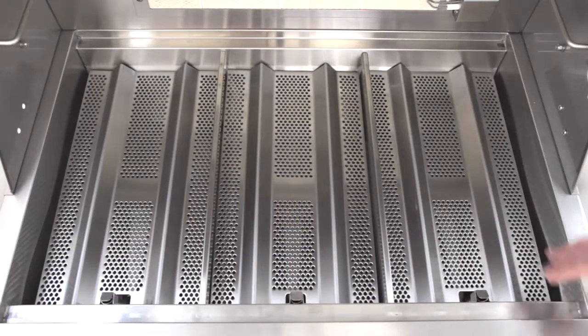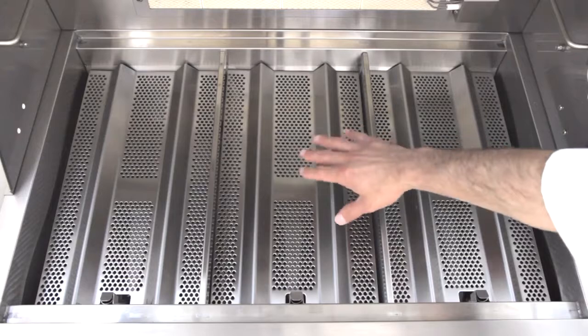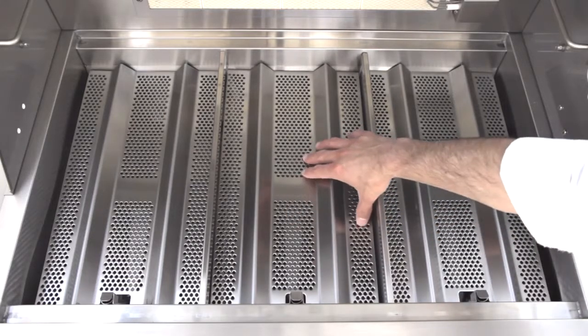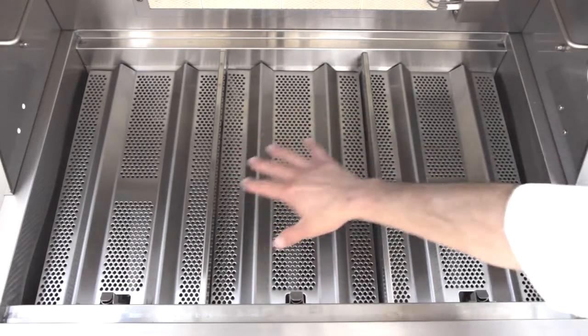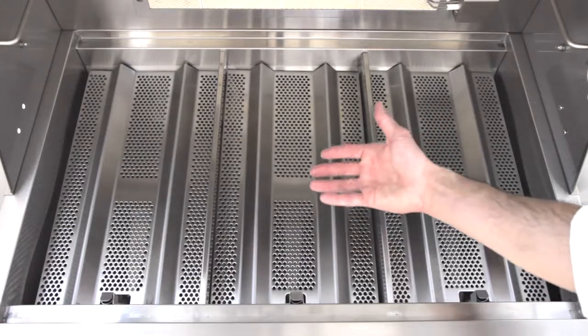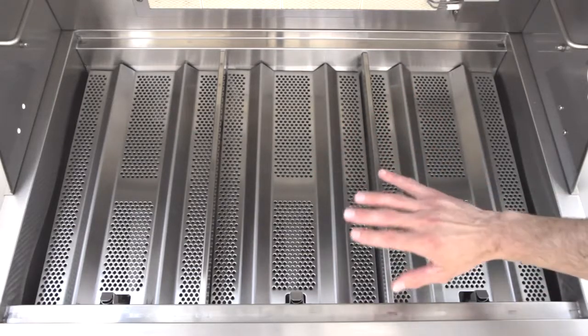Under the cooking grids, the flame stabilizing grids distribute the burners heat evenly across the entire surface, and at the same time protect the burners from drippings by instantly vaporizing them and directing the flavor back to your food.